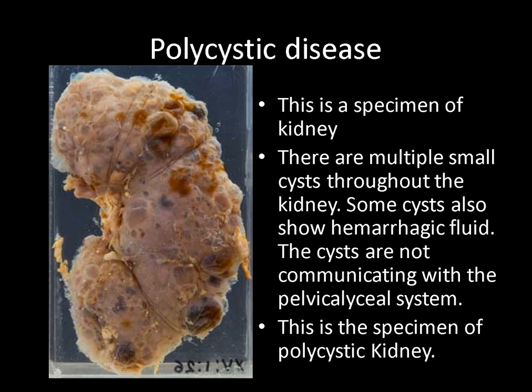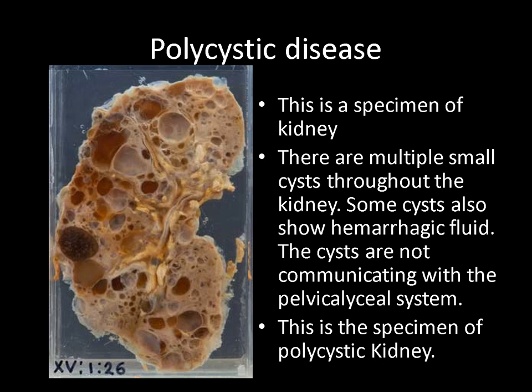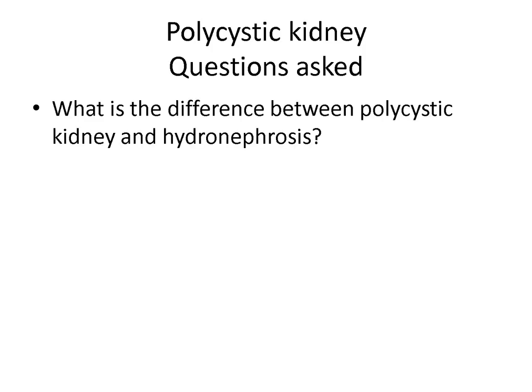The next specimen is again a kidney because of the bean shape, showing multiple small cysts throughout the kidney. When you turn the specimen, you can see that some of the cysts show hemorrhagic fluid. These cysts are not communicating with the pelvicalyceal system. Hence this is a specimen of polycystic kidney. A first obvious question is: how will you differentiate on gross appearance between polycystic kidney and a hydronephrotic kidney?